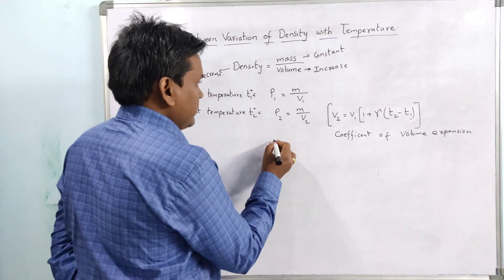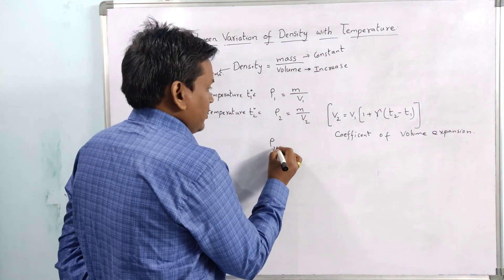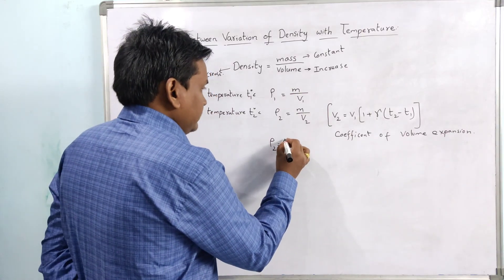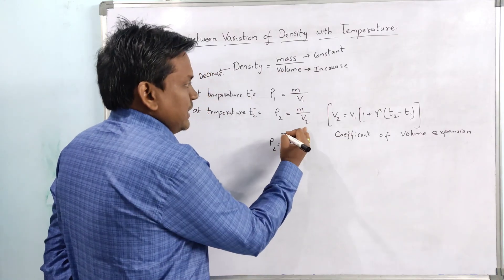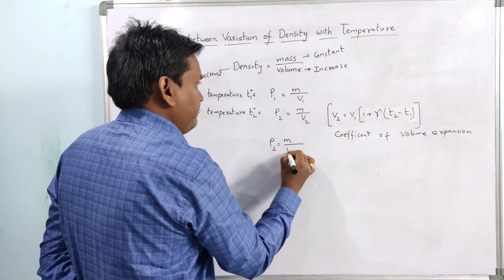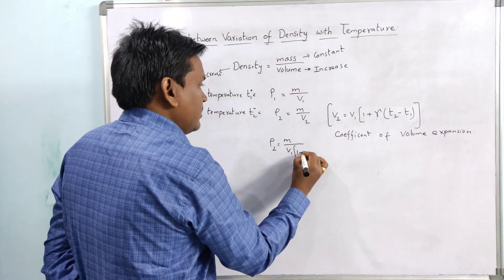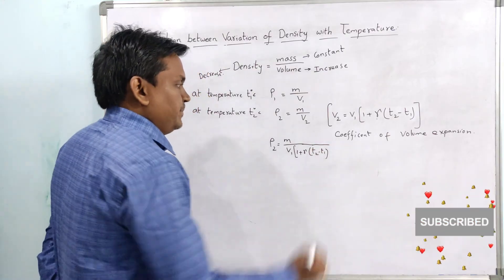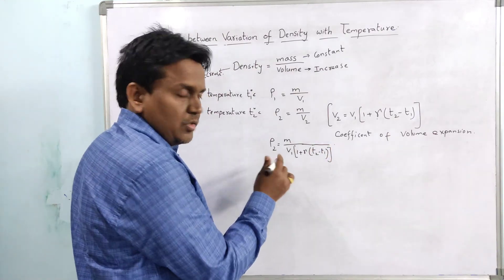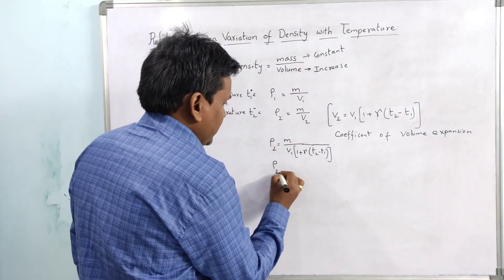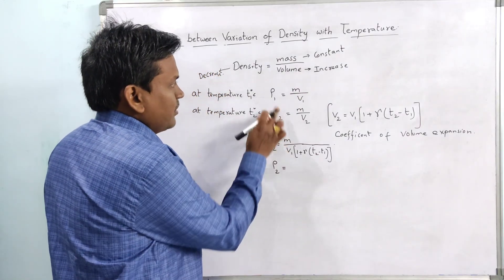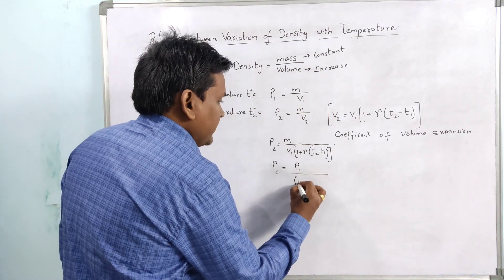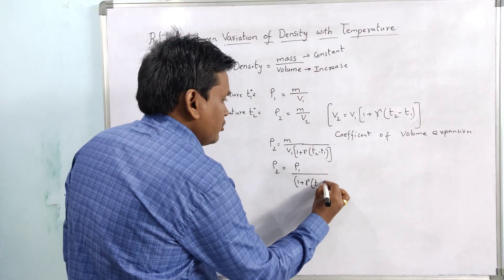If you consider rho 2 equal to m by v2, instead of v2 apply this: v1 of 1 plus gamma into T2 minus T1. Here m by v1, that is nothing but rho 1. So rho 2 equals rho 1 by 1 plus gamma into T2 minus T1.